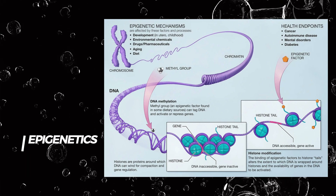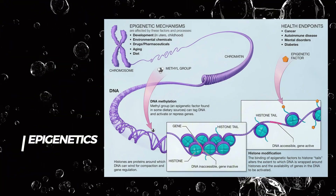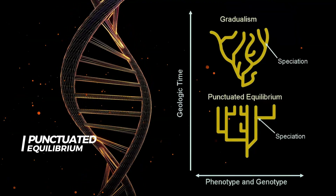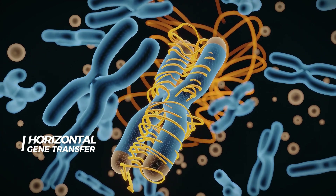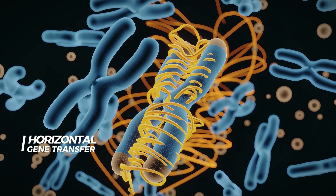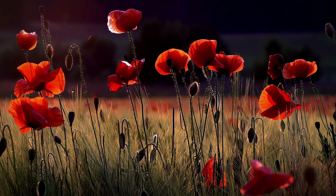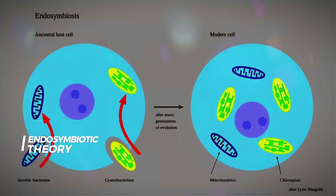Epigenetics studies how environmental factors affect gene expression without changing DNA sequences, and these changes can be inherited. Punctuated equilibrium suggests evolution occurs in rapid bursts followed by long periods of stability, challenging the notion of gradual change. Horizontal gene transfer involves genetic material transfer between species, highlighting interconnectedness and challenging the traditional tree of life. Endosymbiotic theory proposes that complex cells originated through symbiotic relationships between simpler cells, revolutionizing our understanding of cellular evolution.